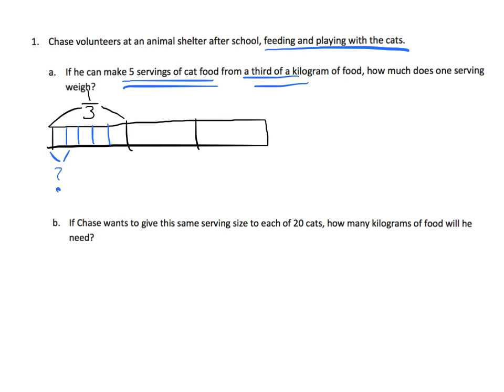Now we can continue cutting all of the thirds into 5 pieces, and we can see that the whole has 15 pieces. And essentially, the math that we're doing is 1 third divided by 5.